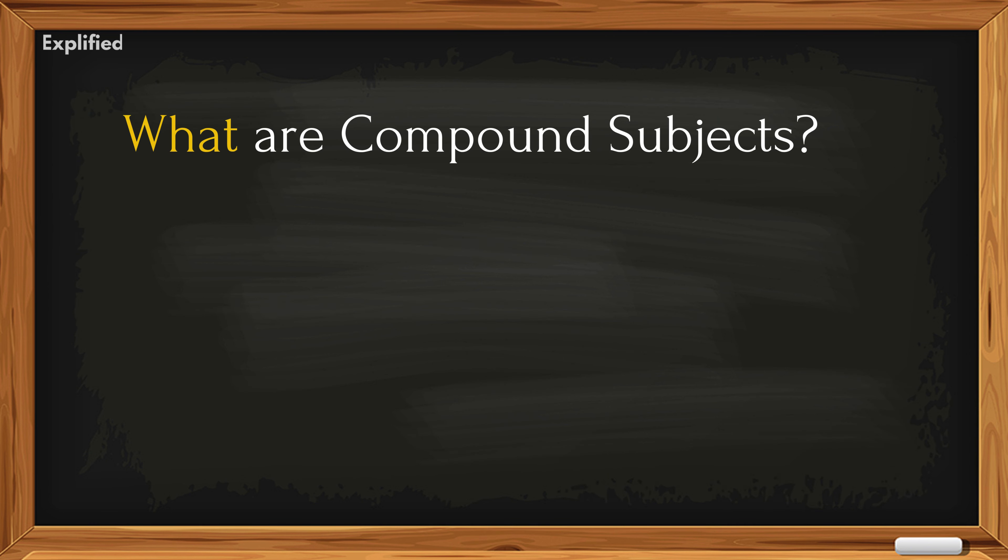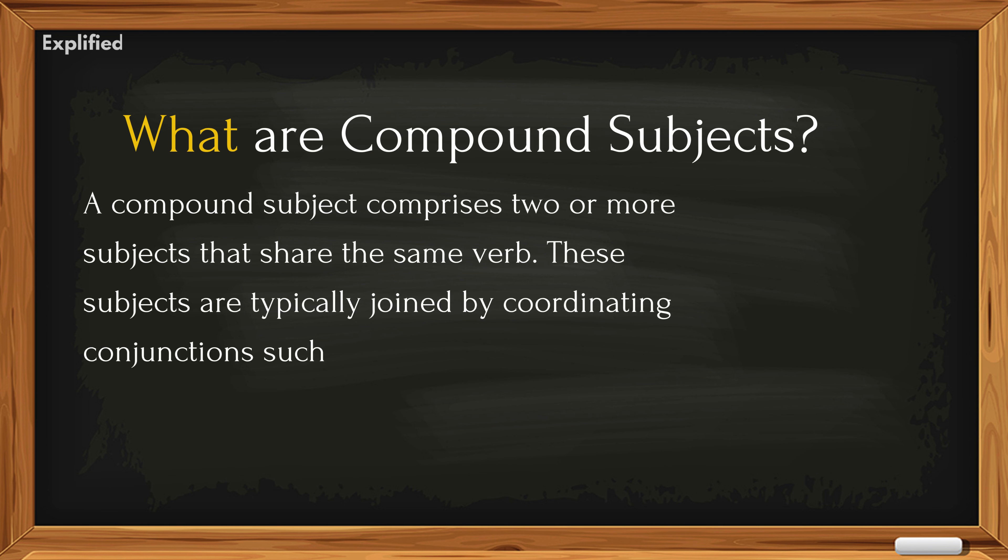What are compound subjects? A compound subject comprises two or more subjects that share the same verb. These subjects are typically joined by coordinating conjunctions such as, and, or, or, nor.